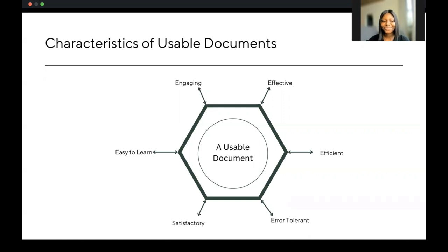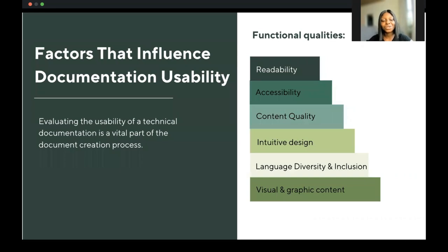There are different factors that influence documentation's usability, taking two different categories. The first is functional qualities, which describes whether or not a document accomplishes its purpose or goals. Factors you look at for functional quality include: whether it's accessible, easy for people to get information immediately, whether it is purposeful, findable, accurate, and complete.